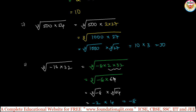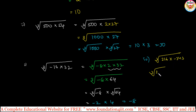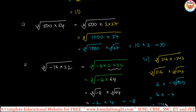So even if numbers are negative or positive, we can split separately. If they are perfect cubes, we can find directly. See one more example: cube root of 216 into minus 343. We know 216 and 343 are perfect cubes. So cube root of 216 multiplied by cube root of minus 343. Cube root of 216 is 6, and cube root of minus 343 is minus 7. So 6 into minus 7 is minus 42.